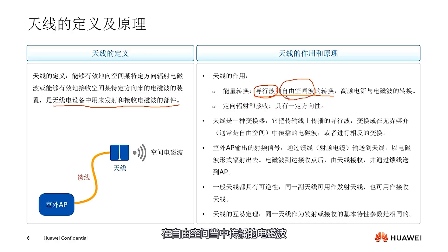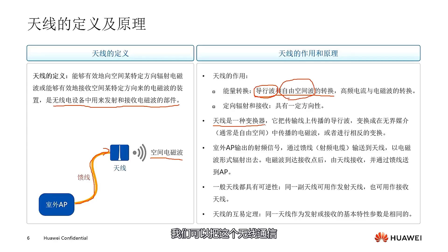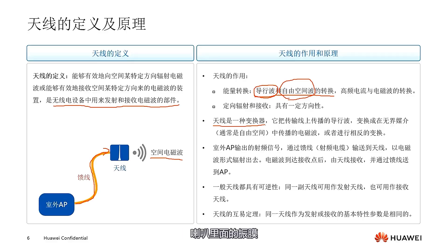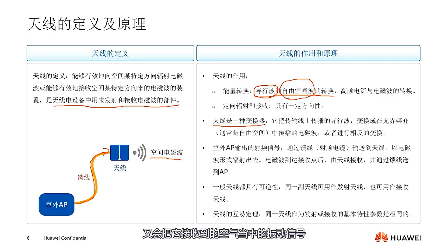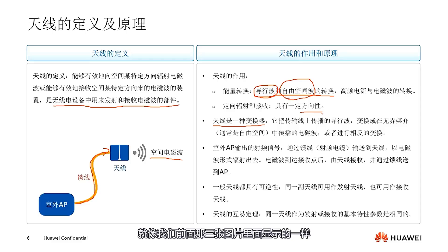Guided waves are electromagnetic waves that travel along a transmission line, while free space waves propagate through free space. For instance, an outdoor AP transmits guided waves via a feed line to the antenna, which converts them into free space waves that propagate through the air. Thus, the essence of an antenna is that of a converter. We can liken wireless communication to sound propagation: if radio waves are like sound, then an antenna is like a diaphragm — converting electrical signals into vibrational signals that propagate through air, or vice versa.